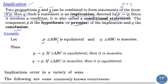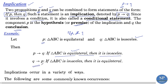For example, let p be the proposition 'triangle ABC is equilateral' and q be 'triangle ABC is isosceles'. From these two propositions we can form p implies q and q implies p. So p implies q means: if triangle ABC is equilateral then it is isosceles. And q implies p means: if triangle ABC is isosceles then it is equilateral.